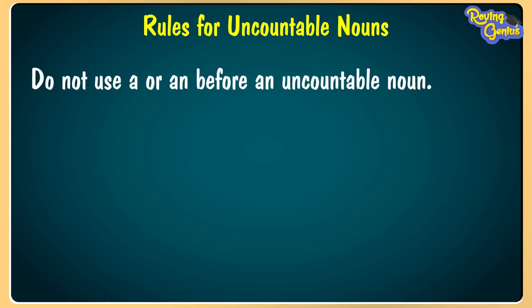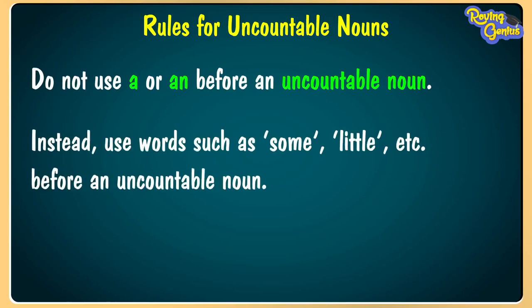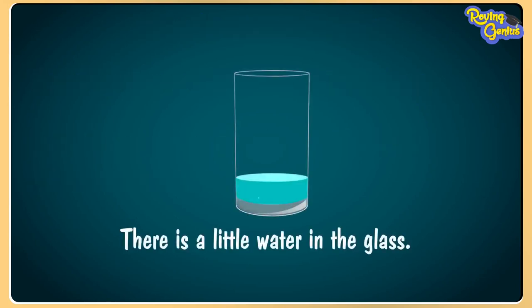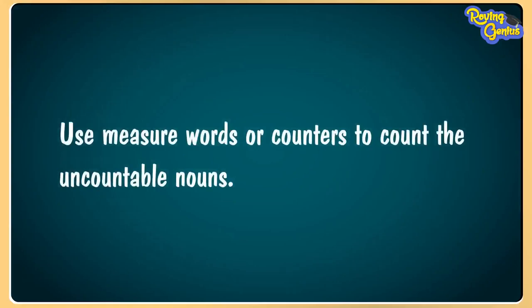Rules for uncountable nouns. First, do not use 'a' or 'an' before an uncountable noun. Instead, use words such as 'some', 'little', etc. For example: there is a little water in the glass; can I have some cookies?